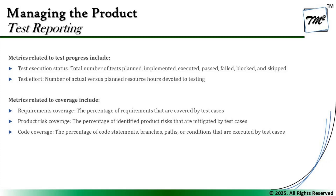The next categories are test progress and coverage. For test progress, it is more about status: number of tests planned, implemented, executed, passed, failed, blocked, and skipped. These span multiple phases of the testing lifecycle — planned in planning, implemented in design, executed during execution. For test effort, metrics include number of actual versus planned resources and resource hours devoted to testing — useful when the team is being pulled off responsibilities, allowing the manager to monitor that deviation.